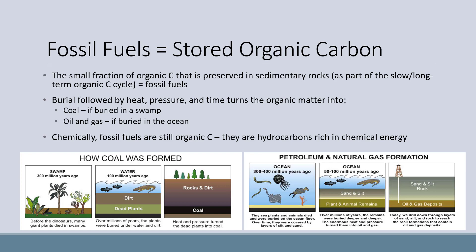Coal was formed when plant matter was buried in swamps, while oil and natural gas were formed when marine algae and animals died and were buried at the bottom of the ocean. Chemically, fossil fuels are still organic carbon — they are hydrocarbons rich in chemical energy, but very different from the original type of organic carbon that was buried. These processes can still occur, but fossil fuels are not a renewable resource for us because they take so long — millions of years — to form.